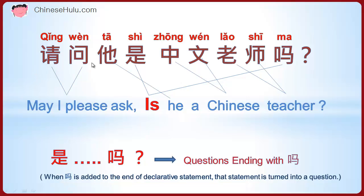请问他是中文老师吗? May I please ask, is he a Chinese teacher? Every time when you see 吗 at the end of the sentence, that will be a question sentence. So 他是 means he is, and adding 吗 at the end turns it into a question: is he a Chinese teacher?